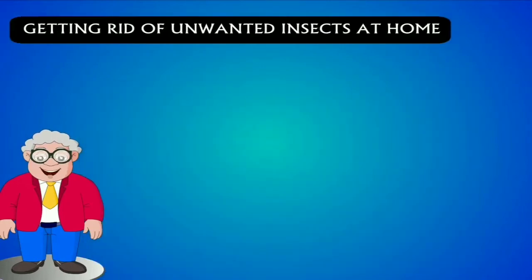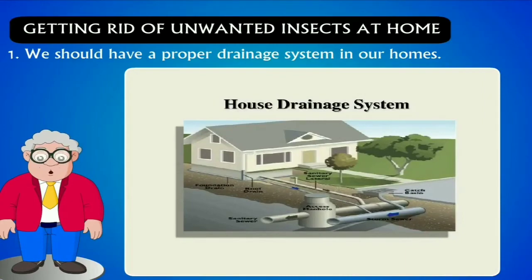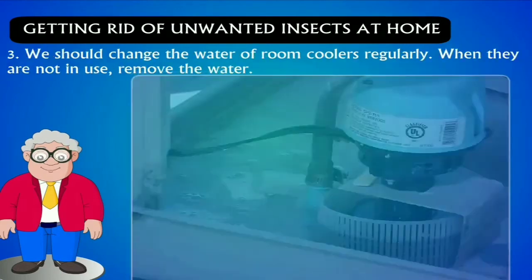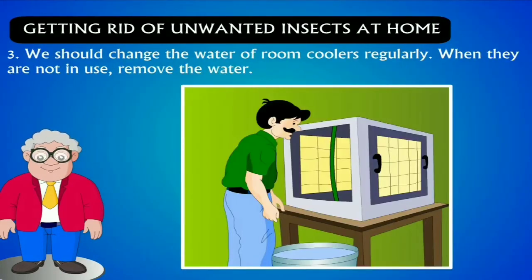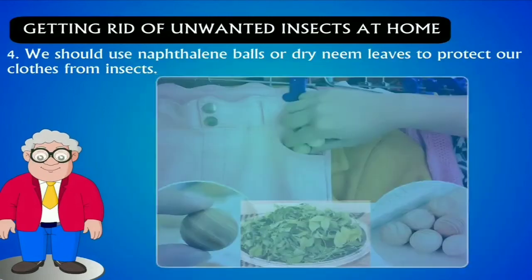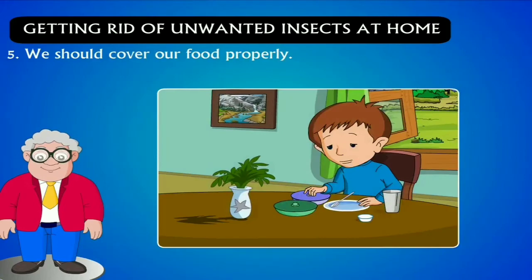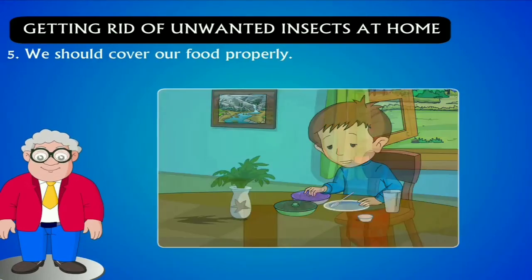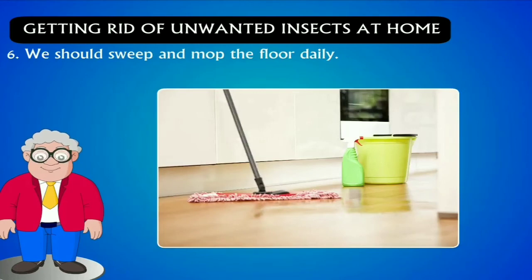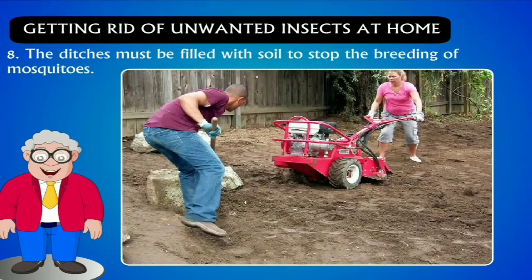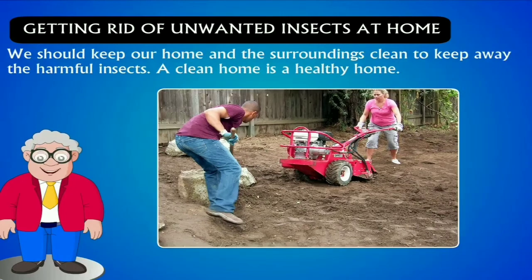Getting rid of unwanted insects at home: One, we should have a proper drainage system in our homes. Two, kerosene oil or DDT should be sprayed on the surface of ponds and lakes to kill the eggs and larvae of mosquitoes. Three, we should change the water of room coolers regularly; when not in use, remove the water. Four, we should use naphthalene balls or dry neem leaves to protect our clothes from insects. Five, we should cover our food properly. Six, we should sweep and mop the floor daily. Seven, drains must be cleaned from time to time. Eight, ditches must be filled with soil to stop the breeding of mosquitoes. We should keep our home and surroundings clean to keep away harmful insects.